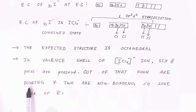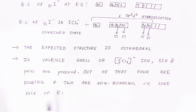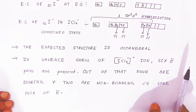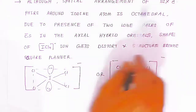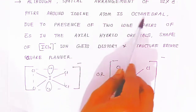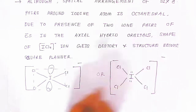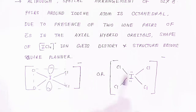Out of these 6 electron pairs, 4 are bonding pairs (from the 4 chloride atoms) and 2 are lone pairs (non-bonding electron pairs). Although the spatial arrangement of the 6 electron pairs around the iodine atom is octahedral, due to the presence of 2 lone pairs in the axial hybrid orbitals, the shape of the ICl₄⁻ ion gets distorted and the structure becomes square planar.